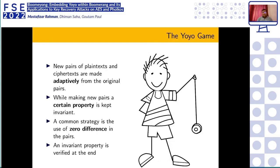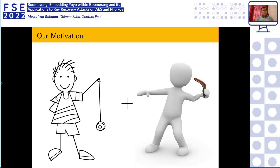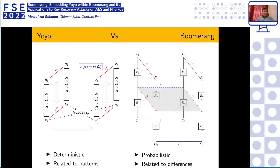The YOYO attack constructs new pairs of plaintexts and ciphertexts adaptively from original pairs, keeping a certain property invariant throughout, and at the end verifies whether that invariant holds. Our main motivation is to merge the YOYO attack with the Boomerang attack. The YOYO attack is more deterministic and pattern-based, whereas the Boomerang attack is probabilistic and difference-based.